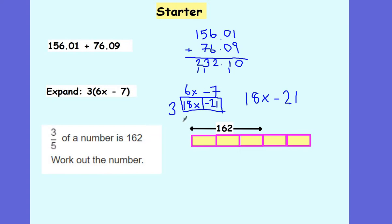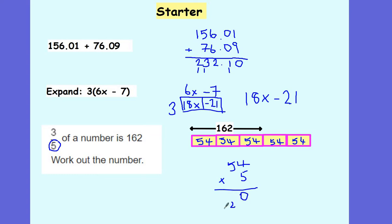And finally, 3 fifths of a number is 162 — work out that number. I'm going to use the diagram I've drawn to help me out. So I split my diagram into 5 because I've got fifths, and I know that 3 of those fifths are worth 162. Let's work out what 1 of those fifths is: divide 162 by 3, which gives me 54. So each of these parts is worth 54. I then want to work out what the whole number is, so I do 54 multiplied by 5. 4 times 5 gives me 20; 5 times 5 gives me 25 plus 2 is 27. So my whole number is 270.